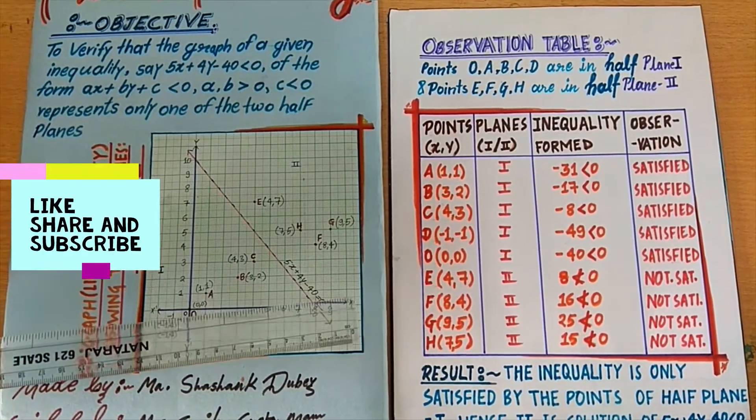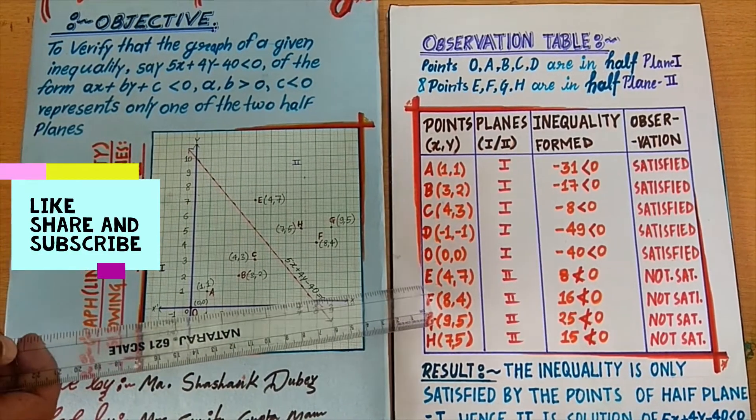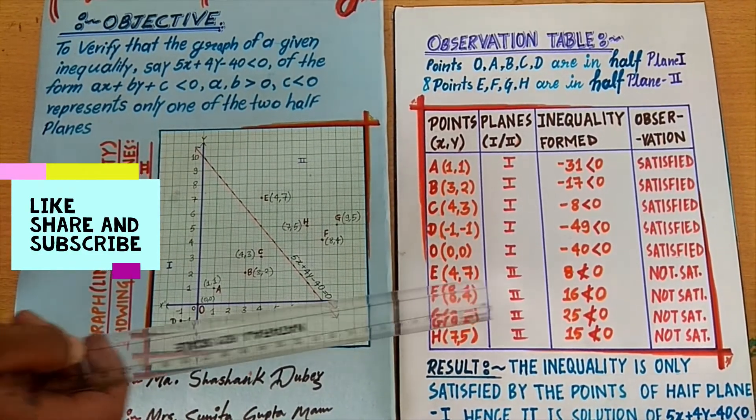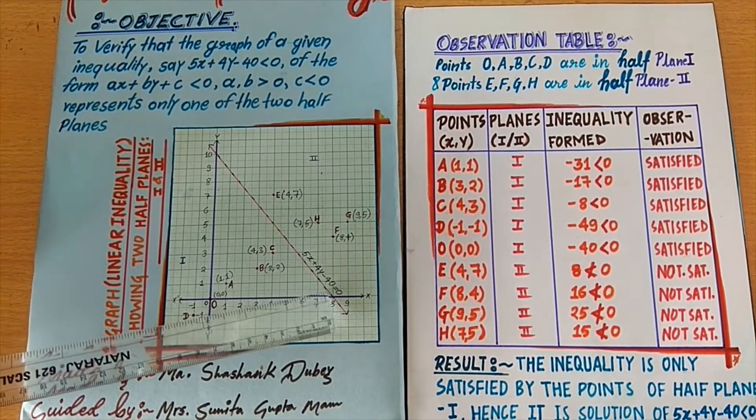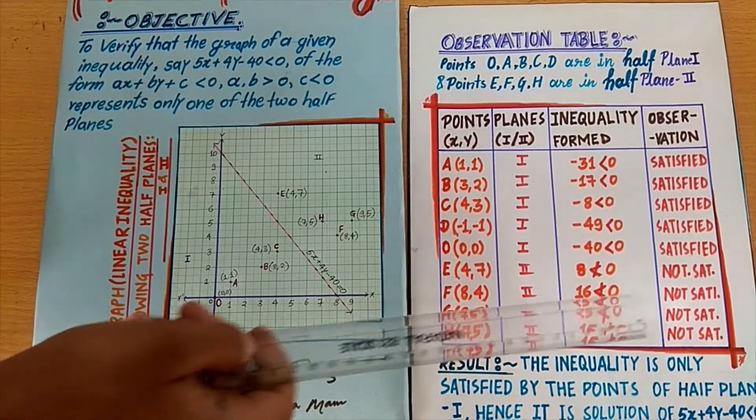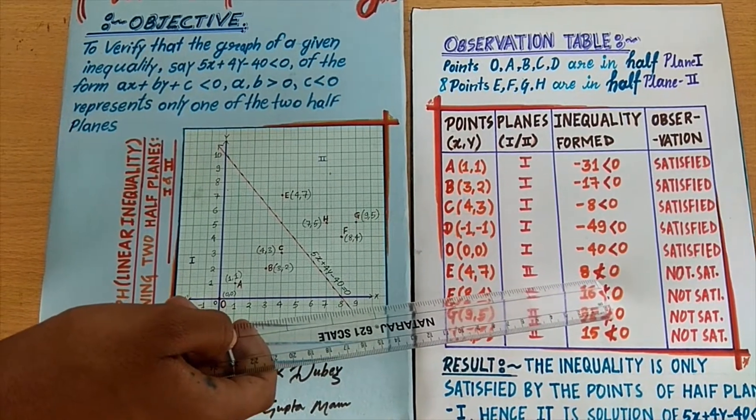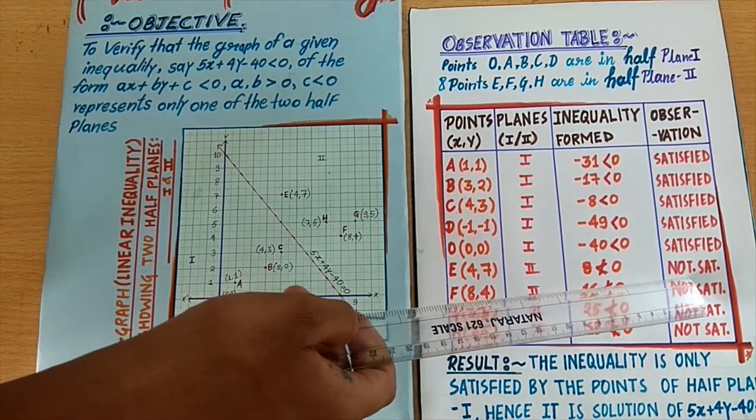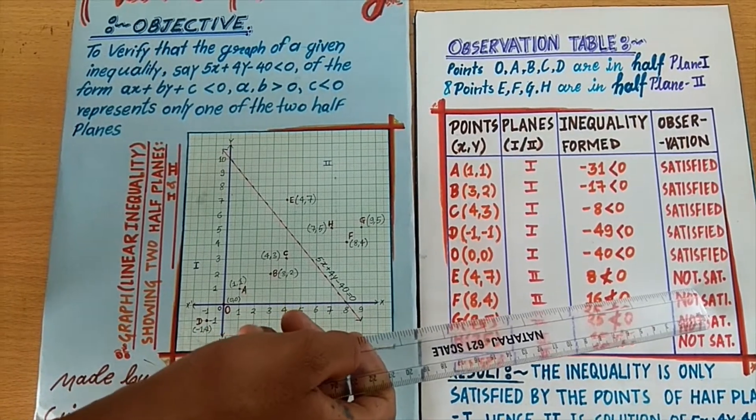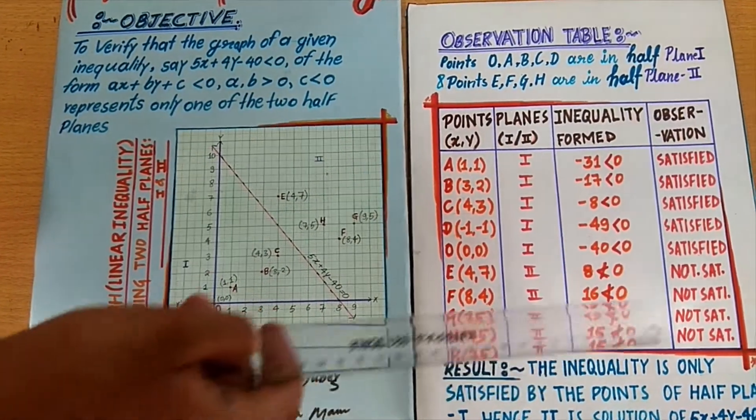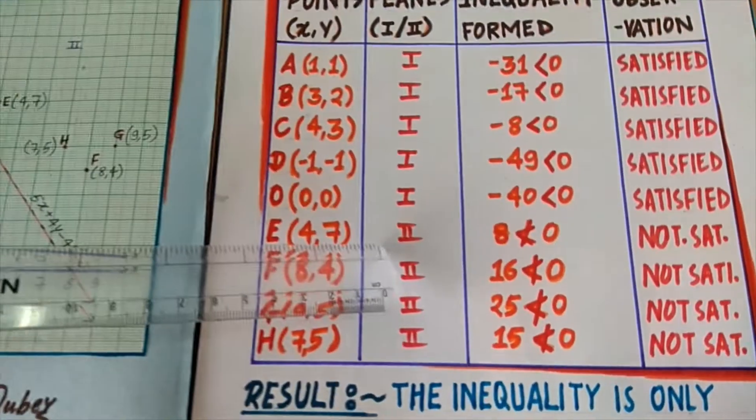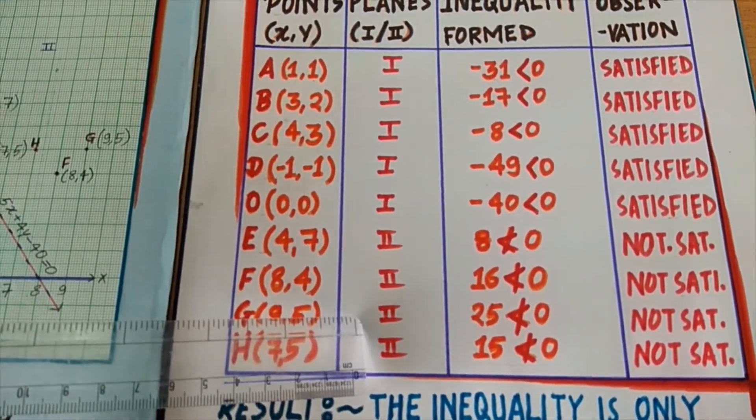And similarly, if we take point E from the second plane and put its coordinates as x and y in the given inequality, the inequality formed is 8 which is not less than 0, so it does not satisfy the given inequality. And we clearly see that all the points from the second plane do not satisfy the given inequality.